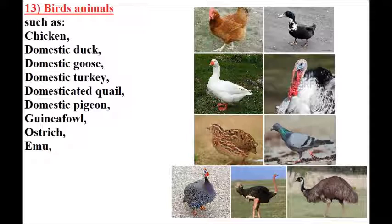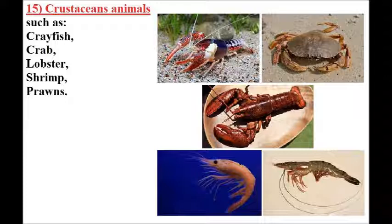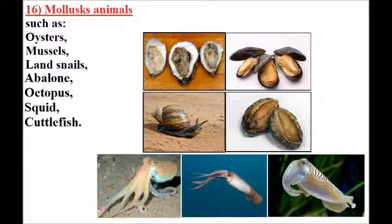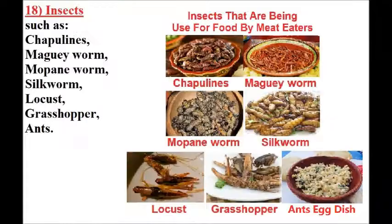16, fish such as carp, catfish, flounder, trout, salmon, striped bass, and sturgeon. 19, crustacean animals such as crayfish, lobster, and shrimp. 21, mollusk animals such as oysters, mussels, land snails, abalone, octopus, and squid. 22, reptile animals such as alligator, crocodile, and turtles. 18, insects such as chapulines, maguey worm, mopane worm, silkworm, locust, grasshopper, and ants.